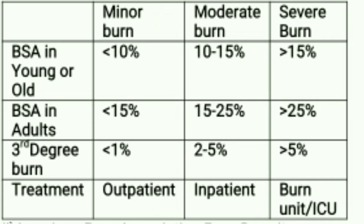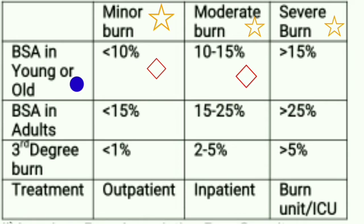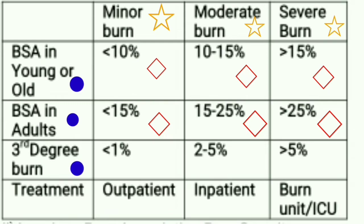Use the following table to determine the treatment depending on the percentage you get. We have minor burns, moderate, and severe burns. Body surface area in the young or old: less than 10% is minor burns; 10–15% is moderate burns; greater than 15% is severe burns. In adults: less than 15% is minor; 15–25% is moderate; greater than 25% is severe. For third-degree burns: less than 1% is minor; 2–5% is moderate; and greater than 5% is severe.